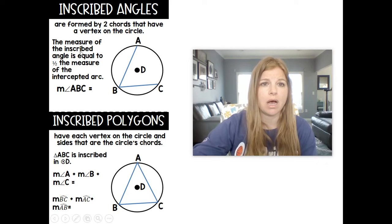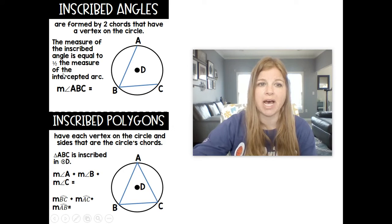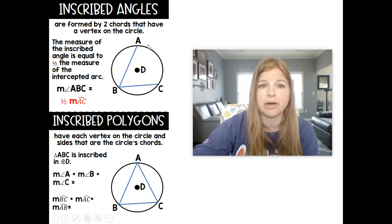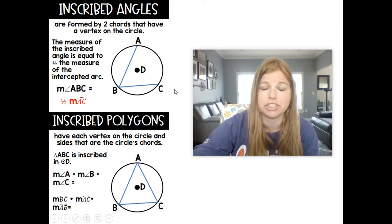So the measure of the inscribed angle is equal to one half of the intercepted arc. This angle ABC, the measure of that angle is equal to one half of the measure of arc AC. So if this arc was 100 degrees, then that angle is 50. If this angle was 40, that arc would be 80. That's the relationship between the two.